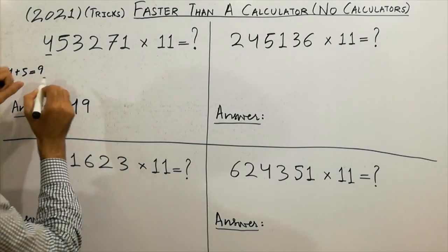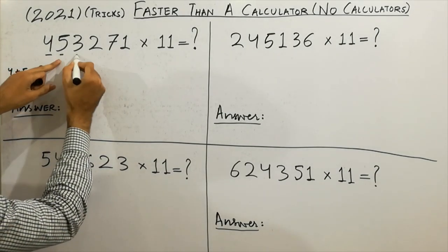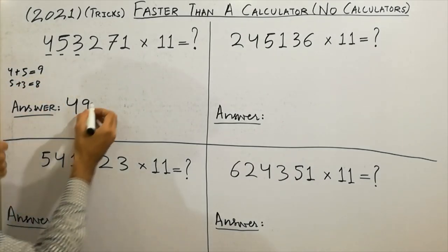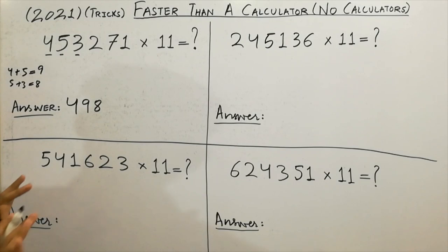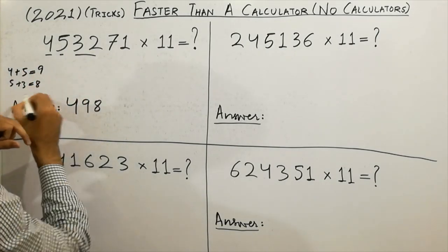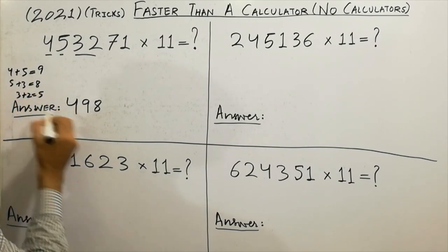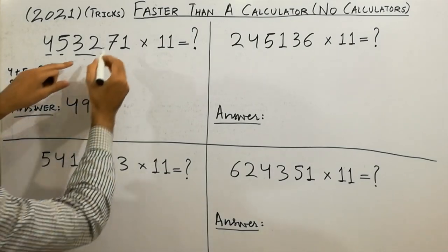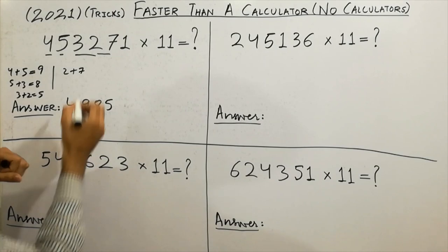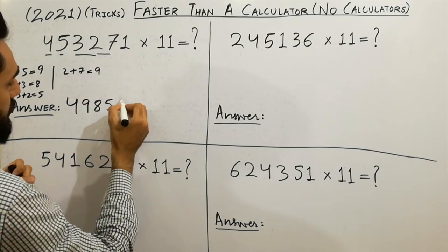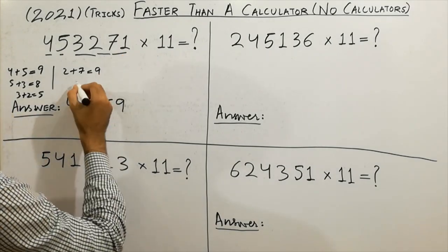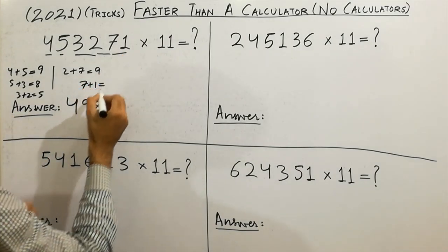That's it. The next step: take 5 plus 3. 5 plus 3 equals 8, so write 8 here. The next step after that: 2 plus 7. 2 plus 7 equals 9, so write 9 here. And the last step: 7 plus 1 equals 8, so write 8 here.